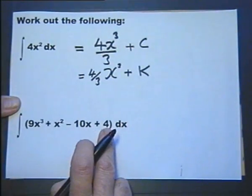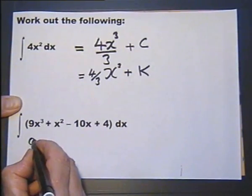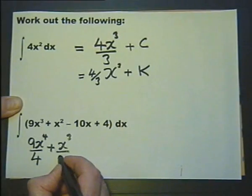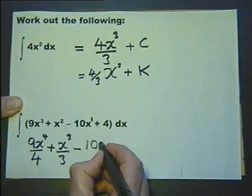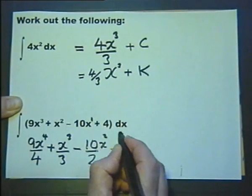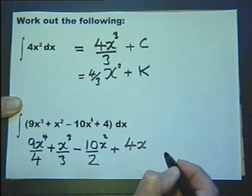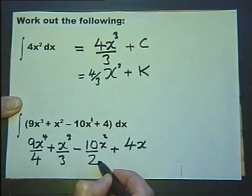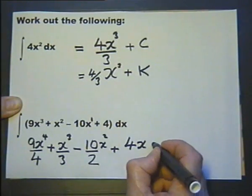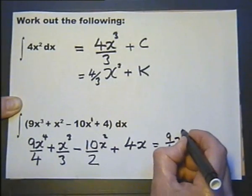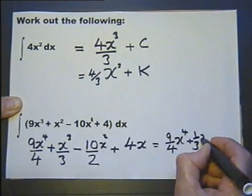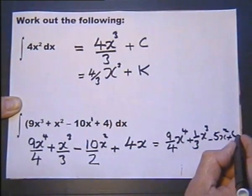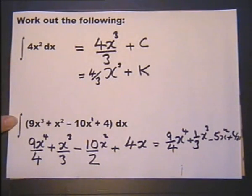Let's integrate this expression. Raise that by one power, divide by that power; raise the next term by one power, divide by that power; there's a little 1 there — raise by one power, divide by the new power; and when we integrate a number, the x comes back. We can simplify — this part becomes one-third, and we can write the terms differently. It's always good to be comfortable seeing the same answer written different ways. So that could be written as one-third x cubed minus five x squared plus four x, plus C — with the integral sign telling us to integrate.